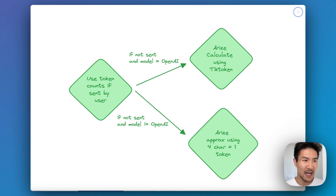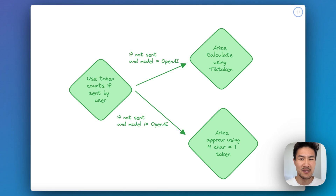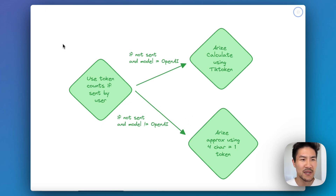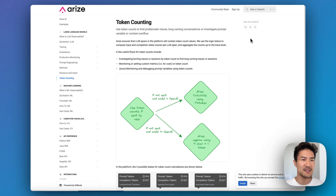If the token count is not provided, then we calculate the token counts for all OpenAI calls using the tiktoken library, and that happens after you send the trace to Arise. For other cases, we use a general rule of thumb, which is the number of characters in the response or input message divided by four. You can always view our docs to get the details of our token counting methods at docs.arise.com.